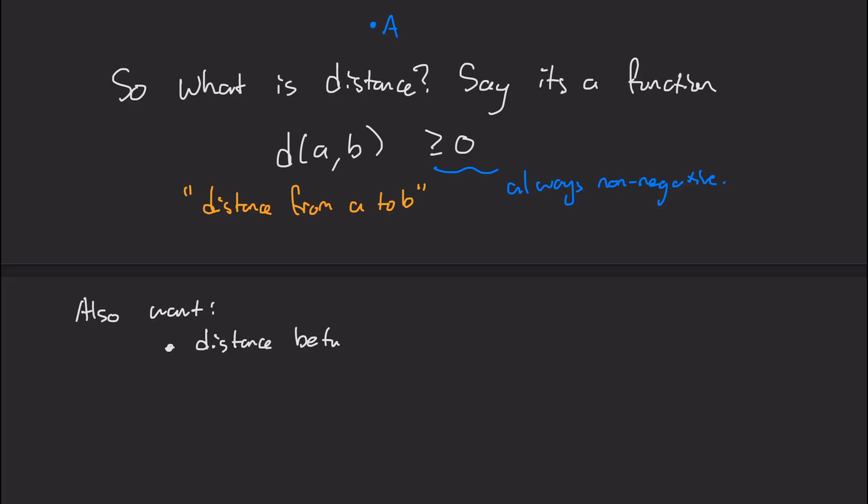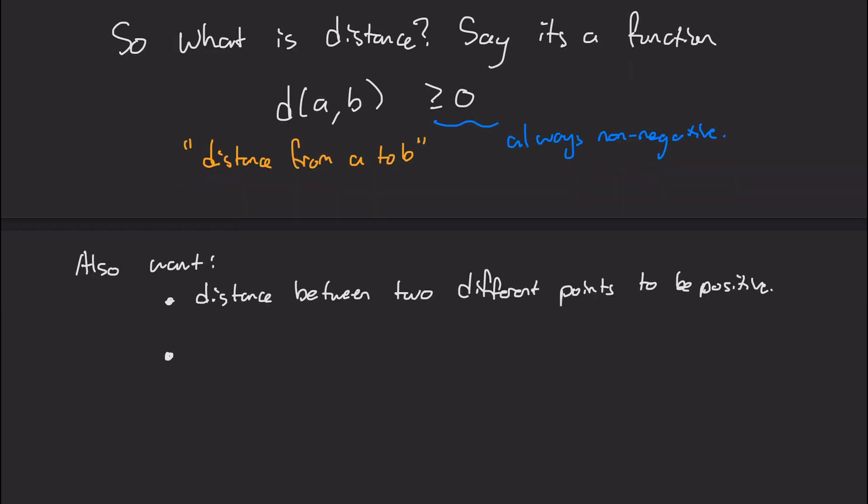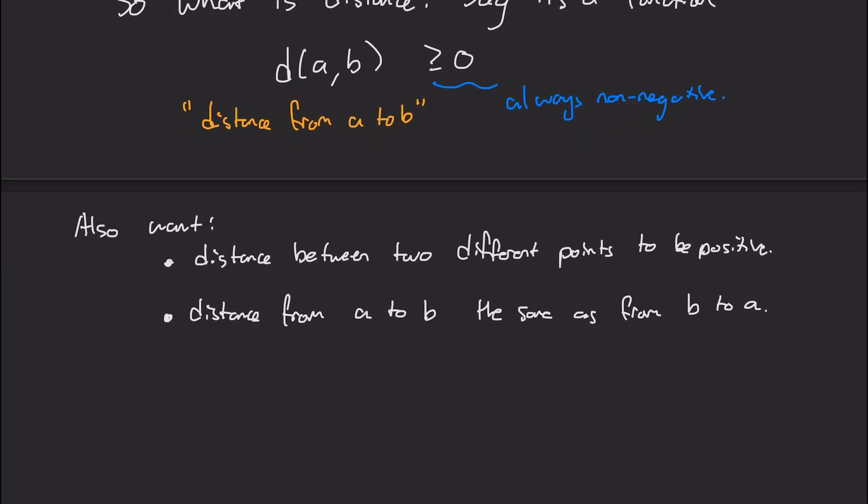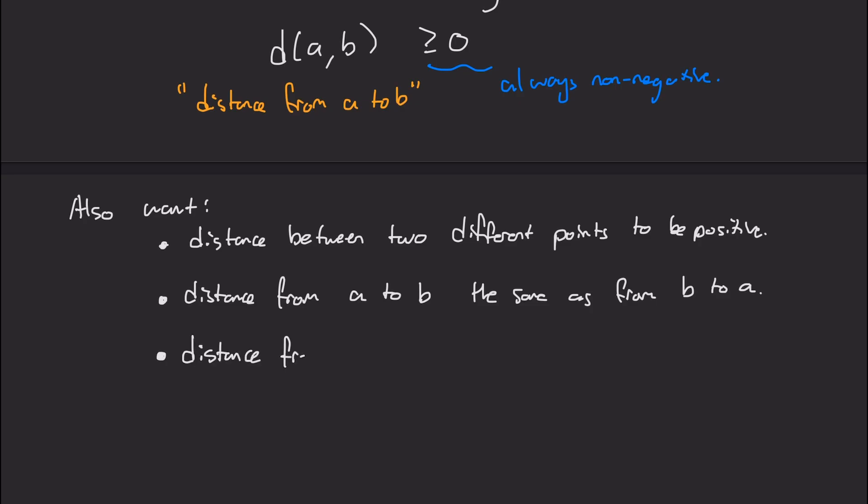So for example, we want the distance between two different points to be positive, because if we traveled no distance, then we should be at the same point. Secondly, the distance from a to b should be the same as from b to a. And thirdly, the distance from a to b should be shorter than stopping at any c first.